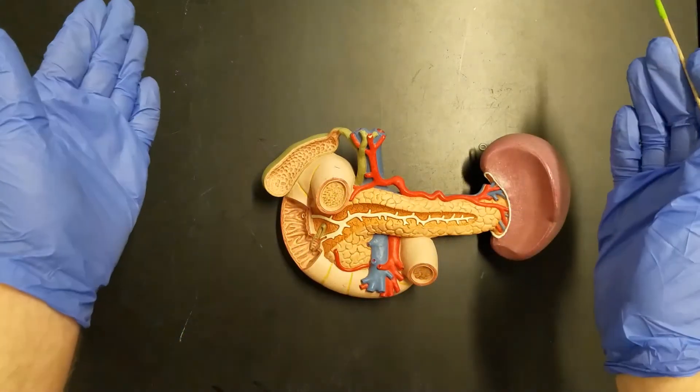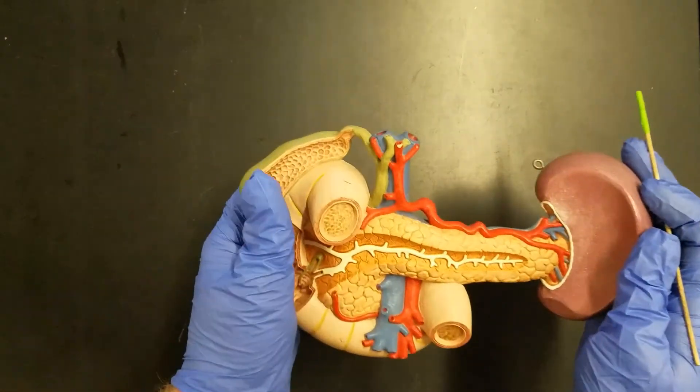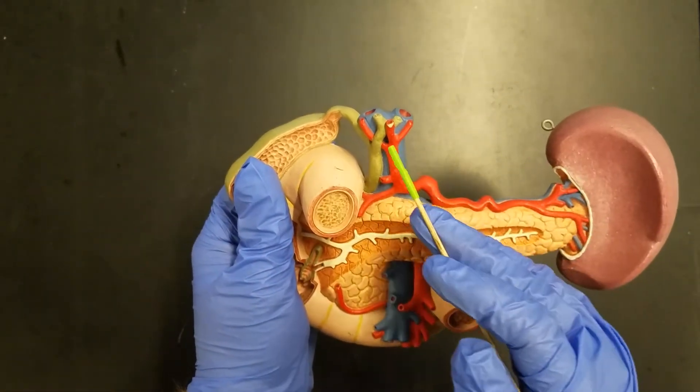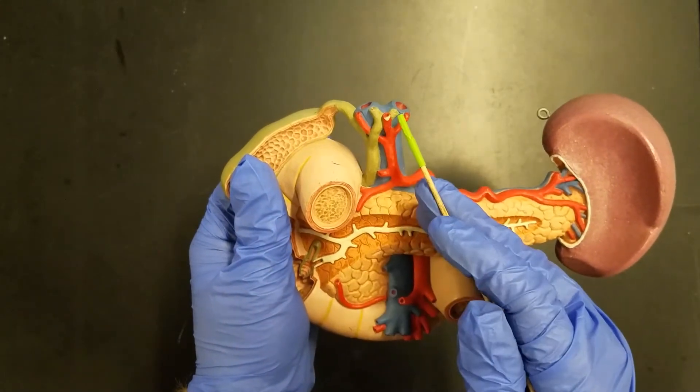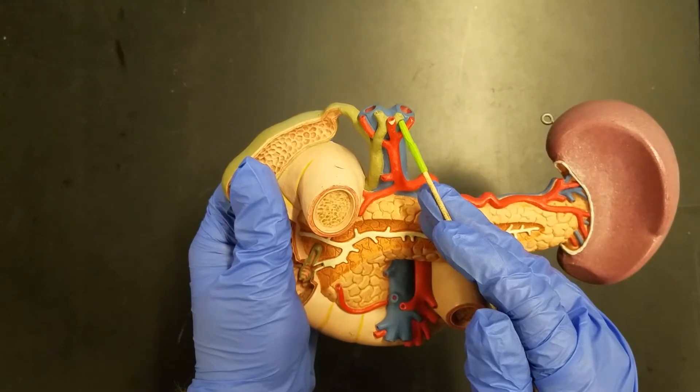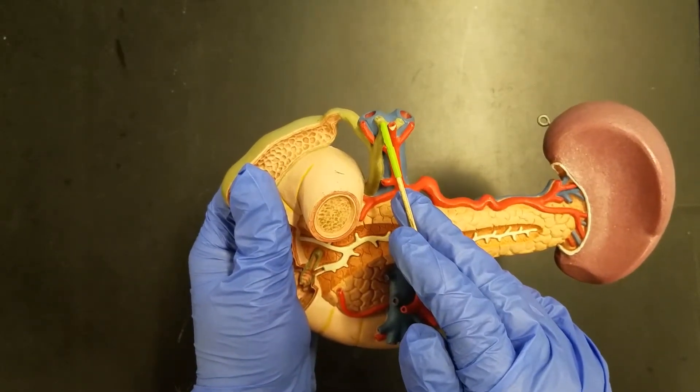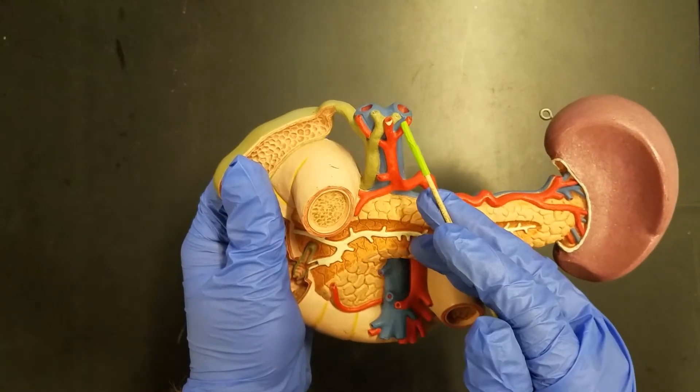As bile is collected by the small passageways inside of the liver, eventually all of that bile is going to drain down into our left and right hepatic ducts. The right hepatic duct drains the right side of the liver, the left hepatic duct drains the left side. Notice how there are these little green vessels.